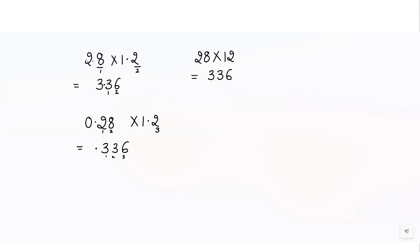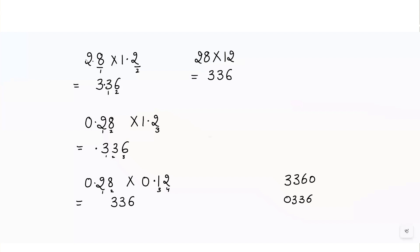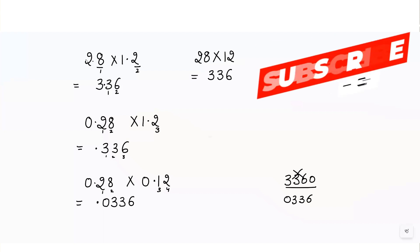Similarly, for 0.28 × 0.12, I have kept the numbers the same for better understanding, so the product will be 336 again. In the question we have 1, 2, 3, 4 — four digits after the point. We can write 0336, but not 3360 because the value would change. We place a 0 before the digits and put the decimal point so that after the point we have a total of four digits, giving 0.0336.